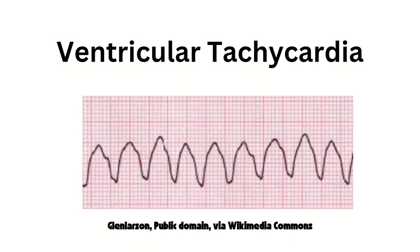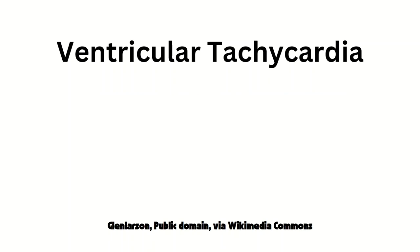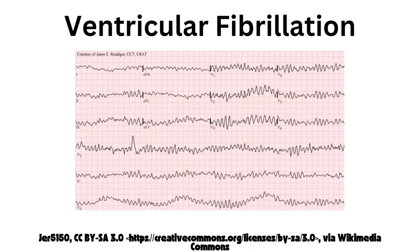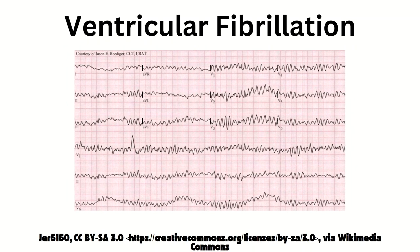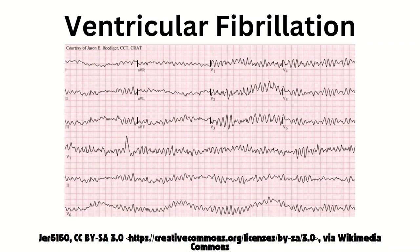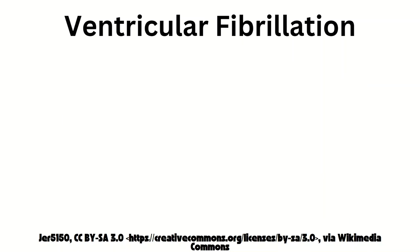If you see a rhythm like this, it goes straight into what you've learned from ACLS. The next biggie is ventricular fibrillation, or VFIB for short. It's characterized by its irregularity, since electrical firing in the ventricles is uncoordinated, leading to different sizes and shapes throughout the ECG.